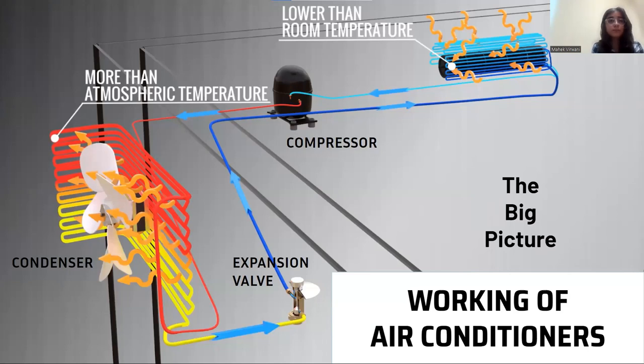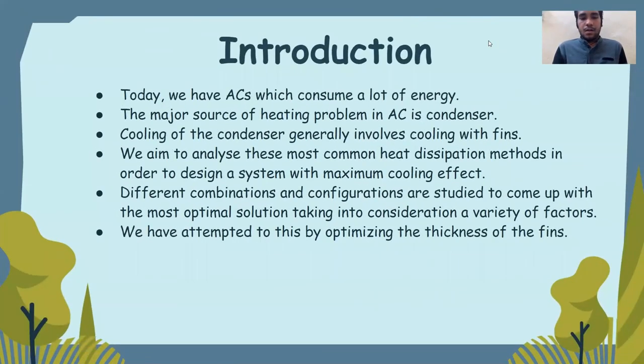So let's move on to the point which drove us to pick up this agenda as a project. We now have air conditioners that use a lot of energy. The condenser is the most common source of heating issues in air conditioners. The most common method of cooling the condenser is to use fins. In hot countries, the temperature and pressure of AC system are increased considerably. This causes a decrease in the cooling capacity of the cycle and also causes an increase in the power consumption.